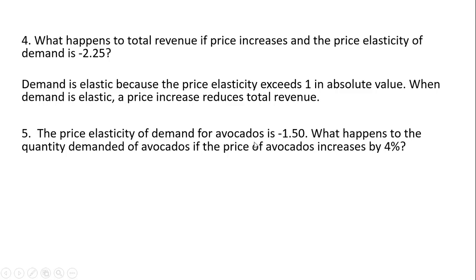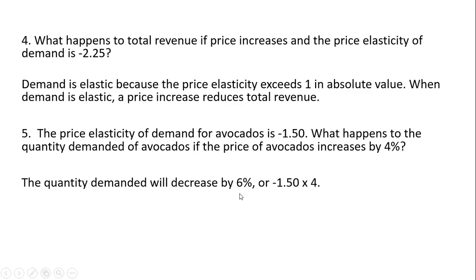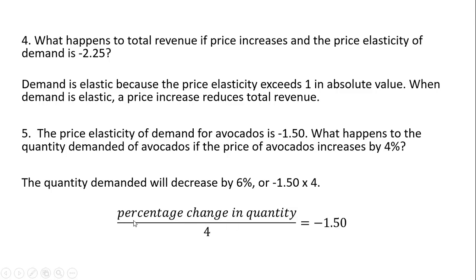Question 5: The price elasticity of demand for avocados is −1.5. What happens to the quantity demanded of avocados if the price increases by 4%? The quantity demanded will decrease by 6%, which is −1.5 times 4. More formally, construct the elasticity equation: percentage change in quantity divided by percentage change in price. We know the price elasticity is −1.5 and price went up 4%, so we multiply both sides by 4: 4 times −1.5 gives us −6%.